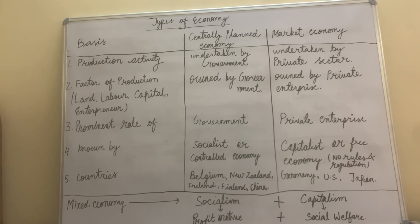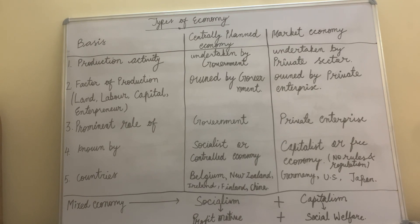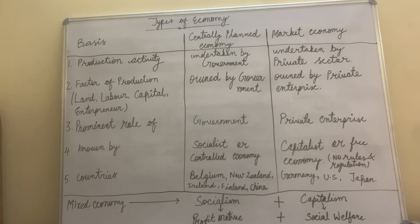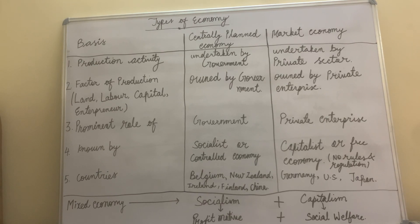Fifth point: countries. We should also know which countries follow which type of economy. Belgium, New Zealand, Ireland, Finland, and China are examples of centrally planned economies — where the government's role is maximized and the private enterprise's role is minimal. For market economy, countries that follow it include Germany, the US, and Japan. Hopefully the difference between centrally planned economy and market economy is now clear.